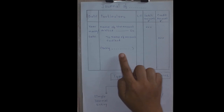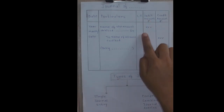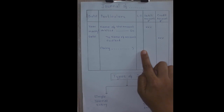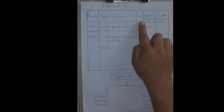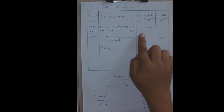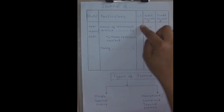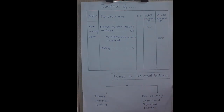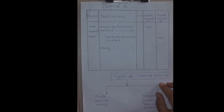Now we are going to move on to our third column, that is ledger folio, denoted by L.F. It means the page number of the ledger. The transactions entered in the journal are posted to the ledger, and in this column the page number should be recorded against each and every account at the time of posting to the ledger.